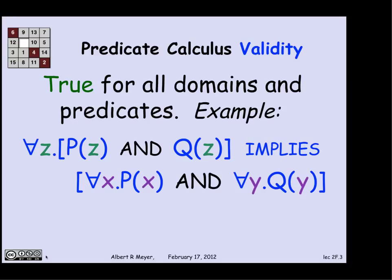I want to argue informally. What this is saying is, suppose that for everything in the domain, both property P of z and Q of z. In other words, everything in the domain has property P and property Q. Well, that certainly implies that everything in the domain has property P, because they have both properties. And also, everything in the domain has property Q, because everything has both properties.